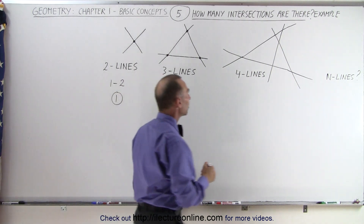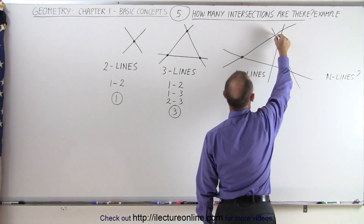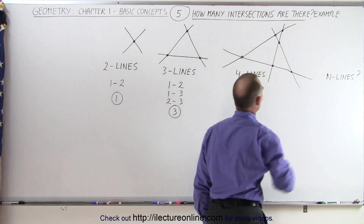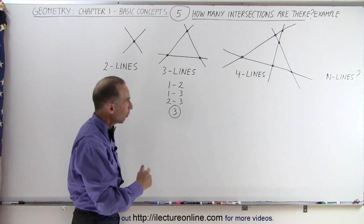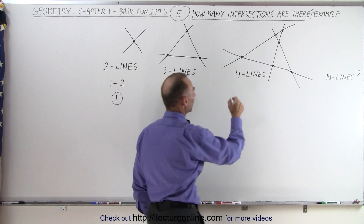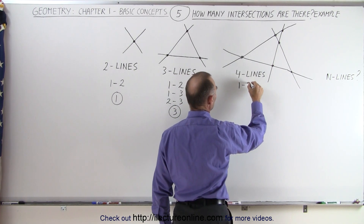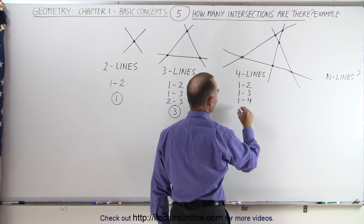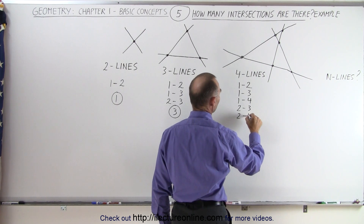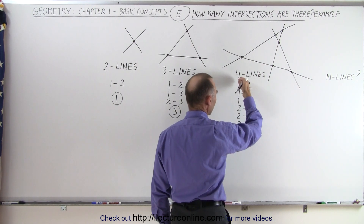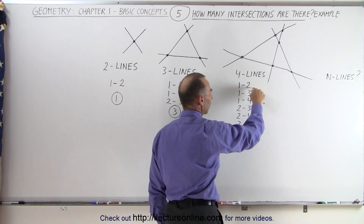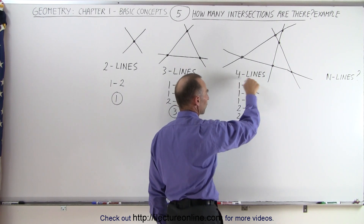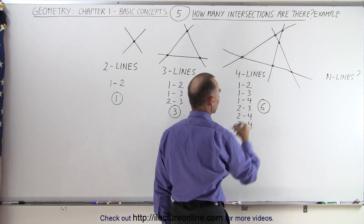Now we have four lines. How many intersections? We have one here, one there, one there, one there, one there, and one there. It looks like with four lines we have six intersections. We can see why: there's an intersection between line 1 and line 2, line 1 and line 3, line 1 and line 4, then 2 and 3, 2 and 4, and 3 and 4. On the left side you keep increasing after you've seen the intersection with every other line, but you can't do 2 and 1 because that's already accounted for — so clearly six intersections.